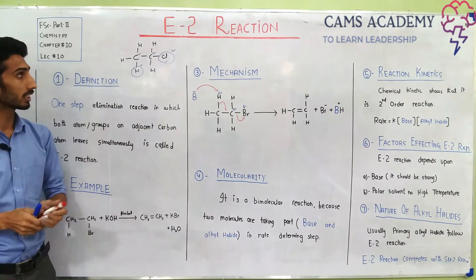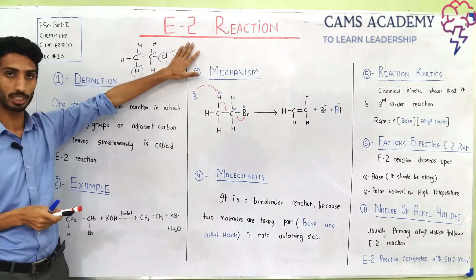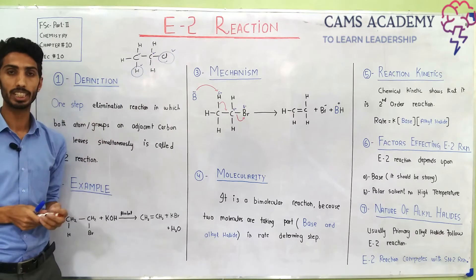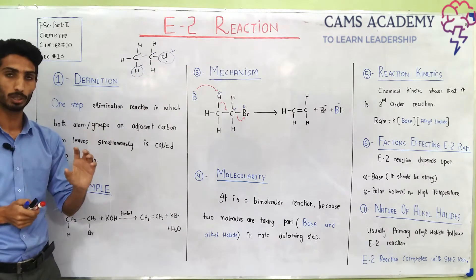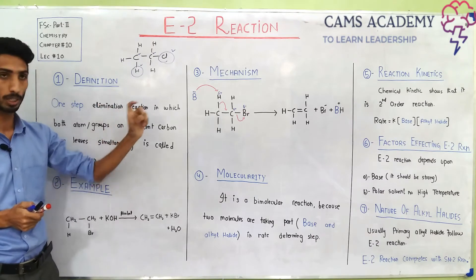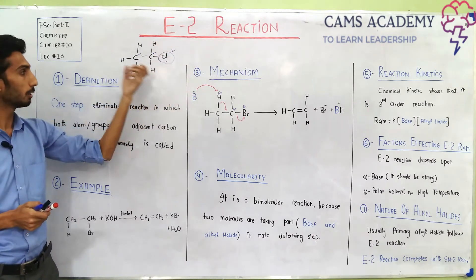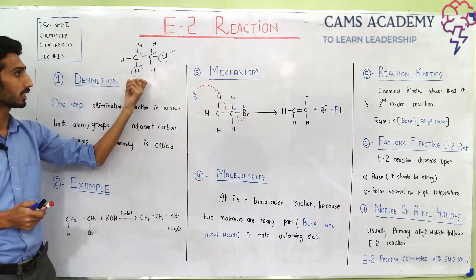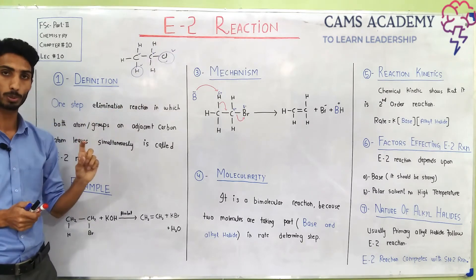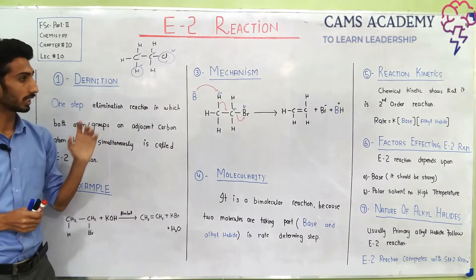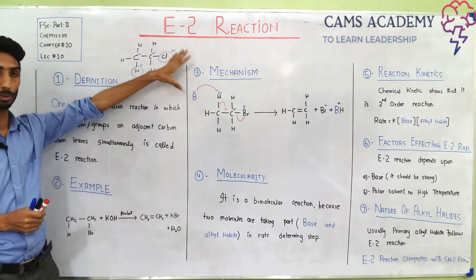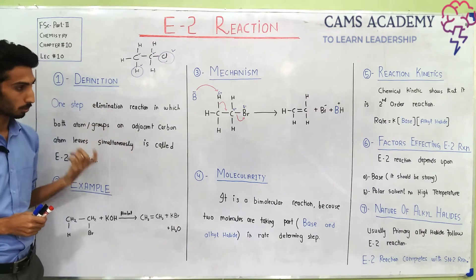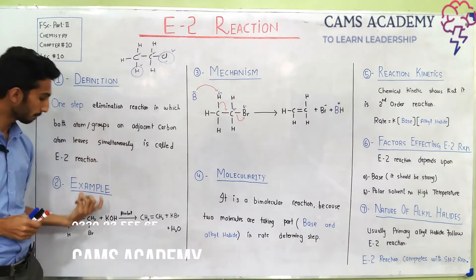The other case is E2 reactions. In E2 reactions, the leaving group and hydrogen are removed simultaneously. So the main difference is clear: in E1, the leaving group leaves first, then in the second step hydrogen on the adjacent carbon is removed. But in E2, both groups are removed at the same time.